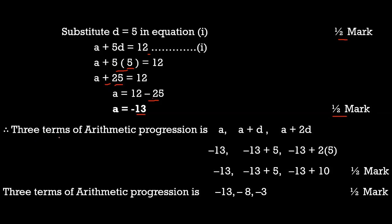Now we find the first three terms of the AP. First term: a = −13. Second term: a + d = −13 + 5 = −8. Third term: a + 2d = −13 + 2(5) = −13 + 10 = −3. You get half a mark for calculating the three terms. Therefore the first three terms of the AP are −13, −8, −3.